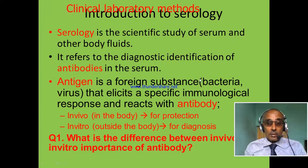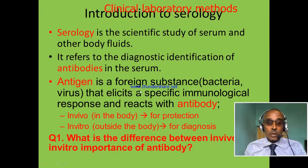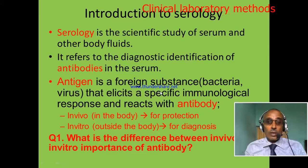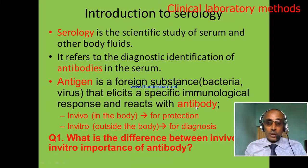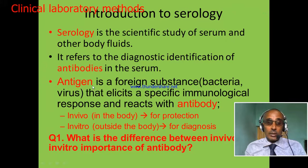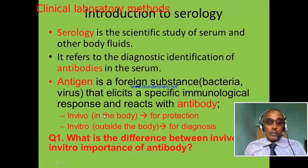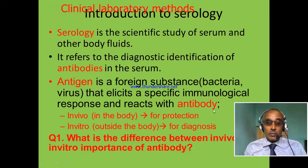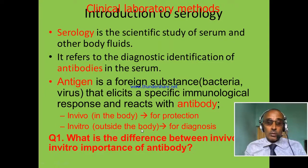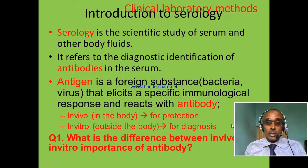An antigen is a foreign substance like bacteria, virus, or other microorganisms which can initiate the production of a specific antibody, and this antibody binds antigens. In vivo, antibodies protect our body from infection. In vitro, they are used to diagnose disease by using serological techniques.